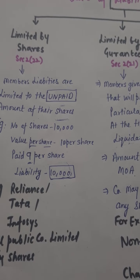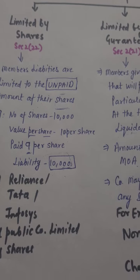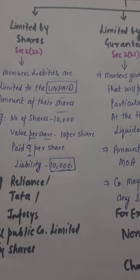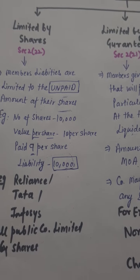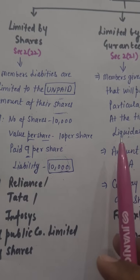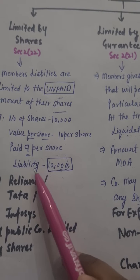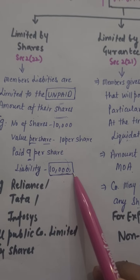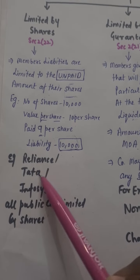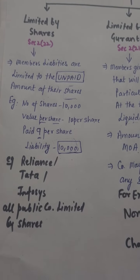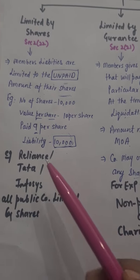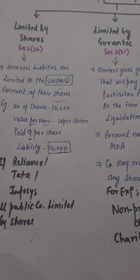For example, if a member holds 10,000 shares at a value of ₹10 per share, the total is ₹1 lakh. If the member has paid ₹9 per share, the unpaid amount is ₹10,000, and their liability is limited to that ₹10,000. For example, Reliance, Tata, and Infosys are all public companies limited by shares.